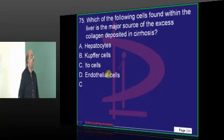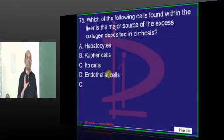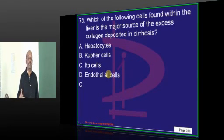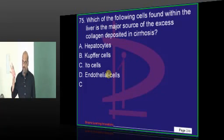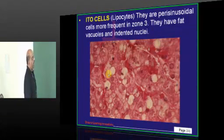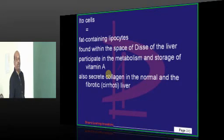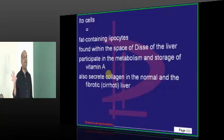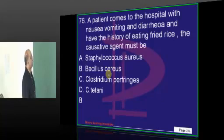Now doctor, it is the Ito cells which are the important cells of the liver, responsible for collagen deposition whenever injury to the liver occurs. They are typically presinusoidal, frequent in zone 3, have fat vacuoles, and are responsible for vitamin A storage. They secrete collagen and are responsible for the pathophysiology of cirrhosis of the liver.